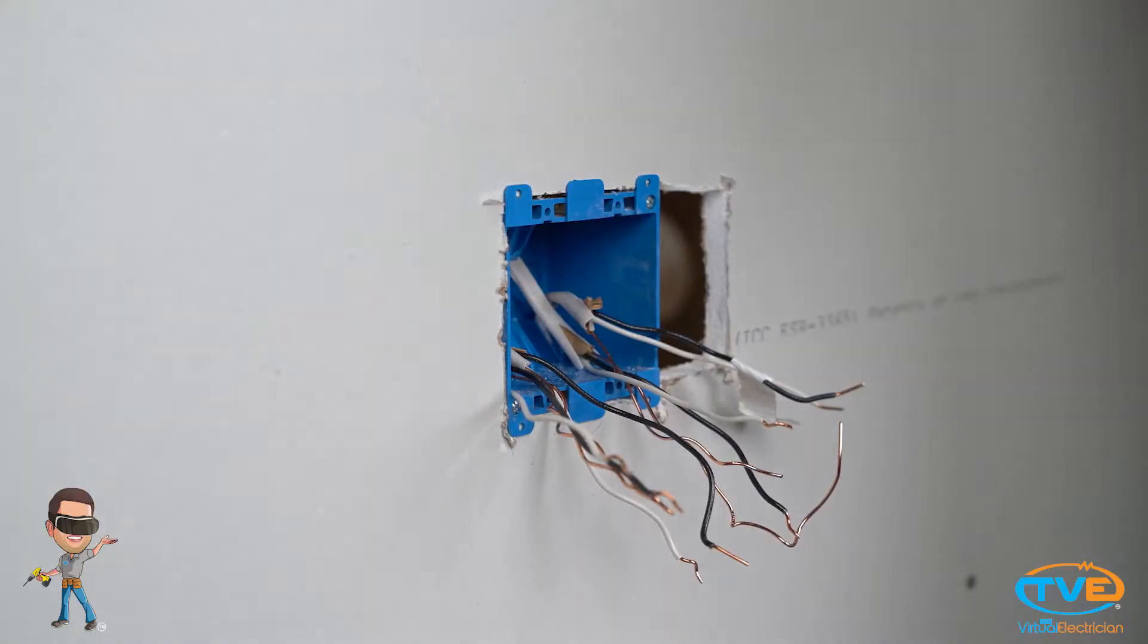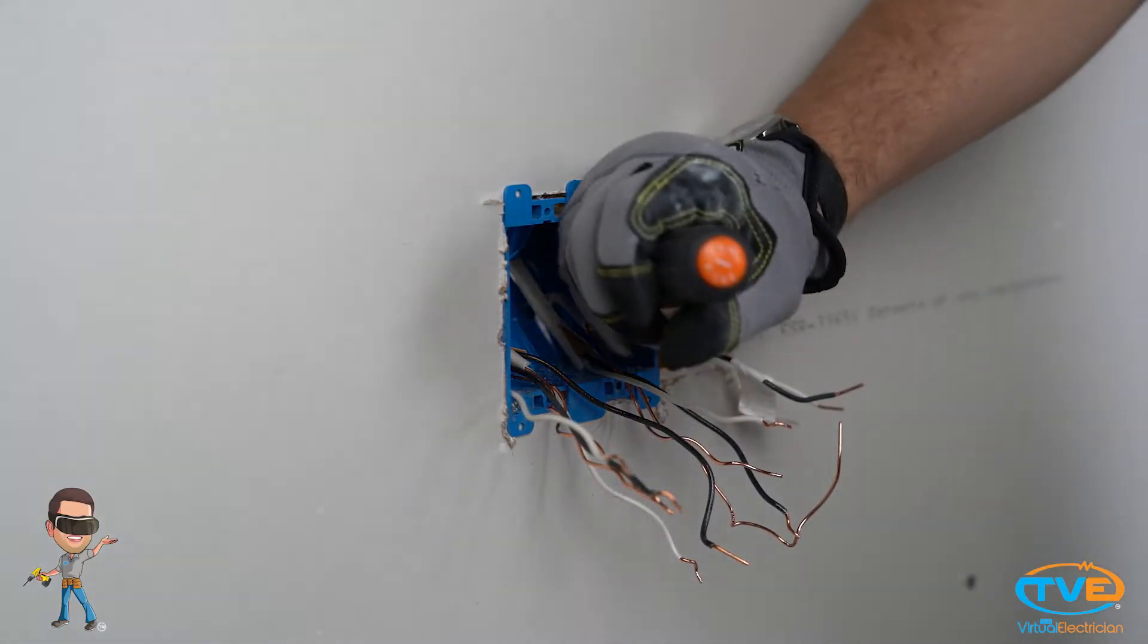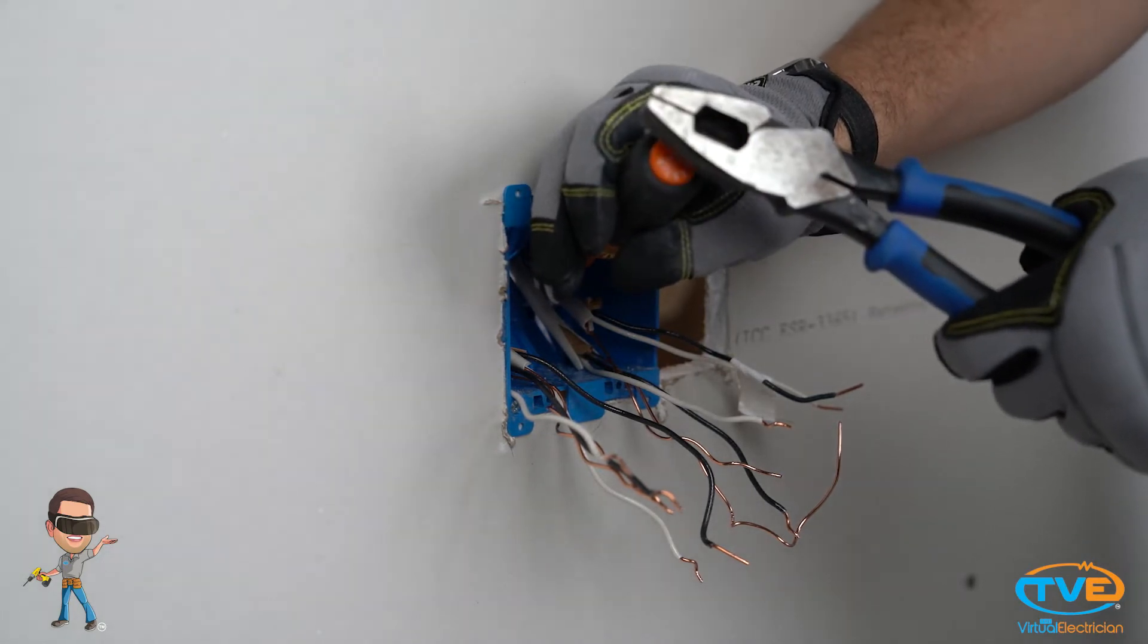After you have them all undone and marked, now it's destruct and destroy time. I usually take my beater screwdriver and my linesman's and just try to beat the box off the stud. Sometimes the boxes are fiberglass and you can just break them apart.